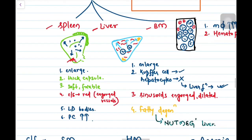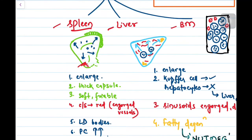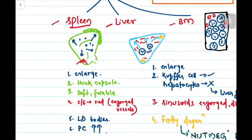First is spleen. Keep in mind this representative diagram. The capsule is very thickened. Then the spleen is enlarged - splenomegaly. The spleen has become very soft and very friable, because of which on cut section there will be engorgement of vessels and it will appear very red. You can also see LD bodies inside the spleen and also plasma cells will be high.